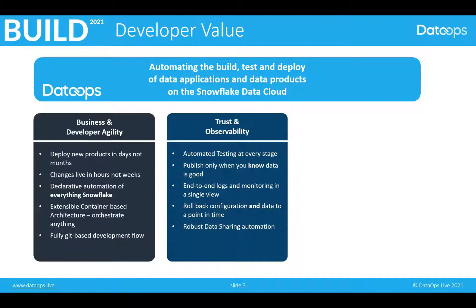Automated testing is key for trust, and you'll see that when we go through the pipeline — testing at multiple different stages to make sure that what we think should be happening with the data is actually what's happening. Only publishing data to my business users when I know that data is good. Gone are the days when we can treat our users as our testers. Our users do not expect to see anything that we haven't tested ourselves, and if we're ingesting data every 30 minutes or every 15 minutes, the only way we can do that testing meaningfully is automatically. Visibility of what can be a fairly heterogeneous and complex environment — seeing all of the logs, all of the monitoring, all the relationships between the processes in a single end-to-end view.